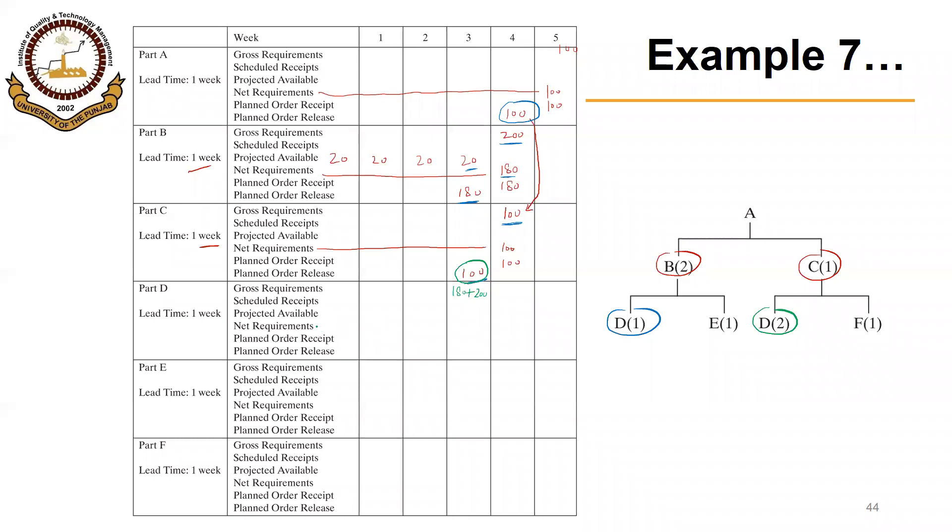There are no scheduled receipts, no projected available, so net requirements will also be 380. Planned order receipt of 380. Lead time is one week, so planned order release will be 380 in week 2.